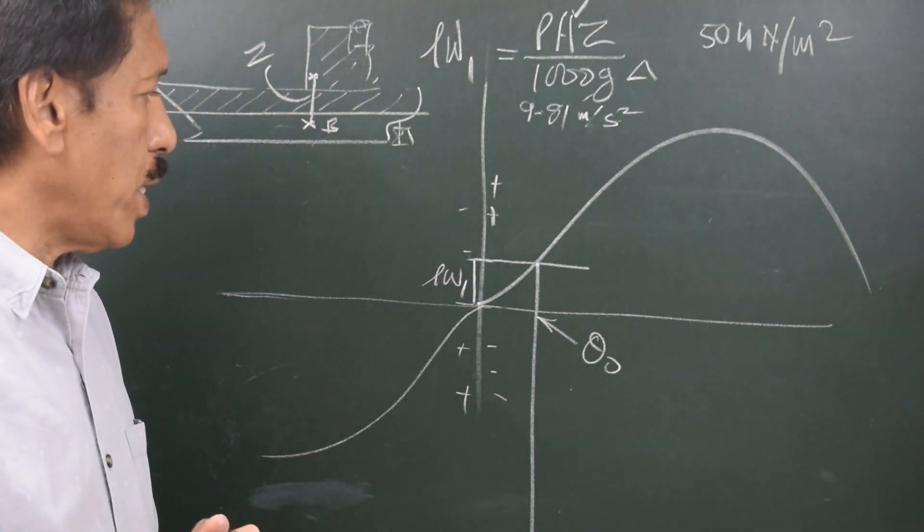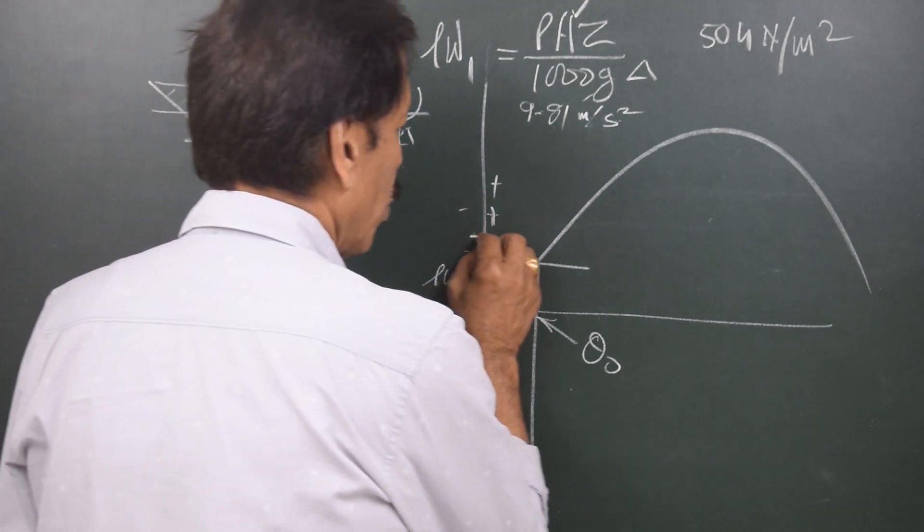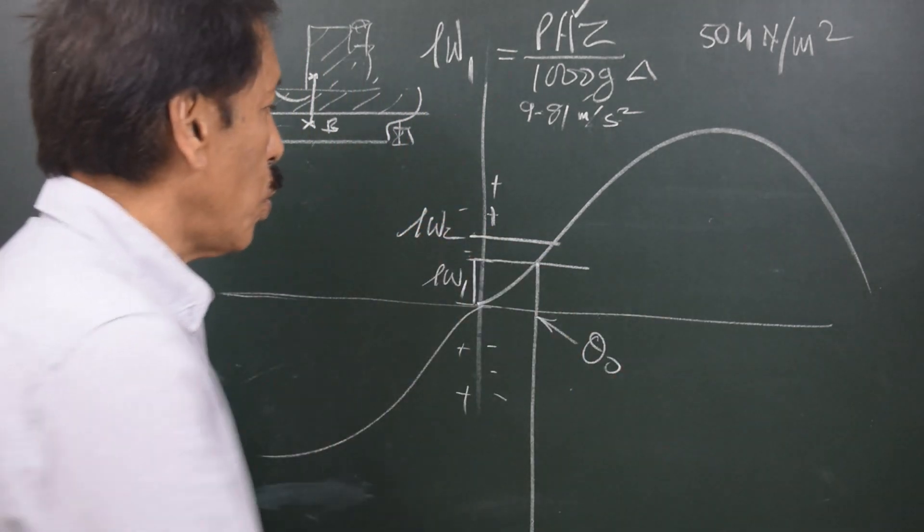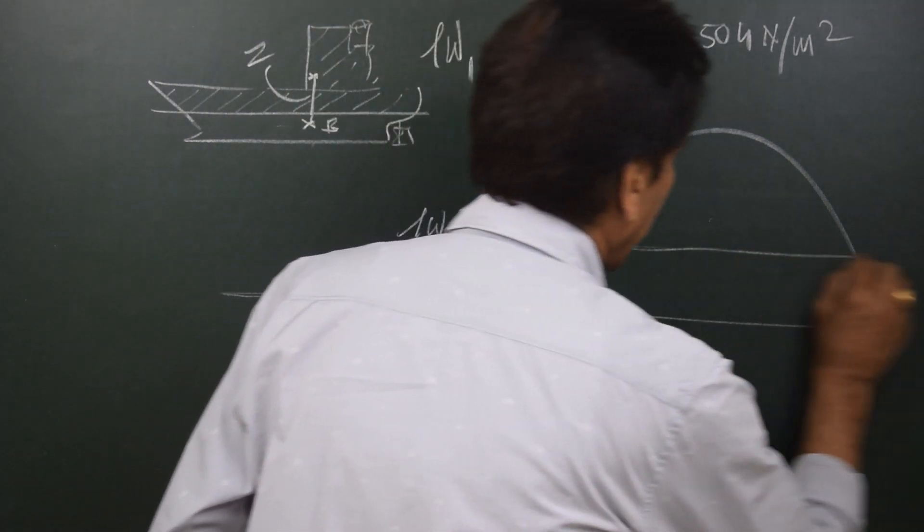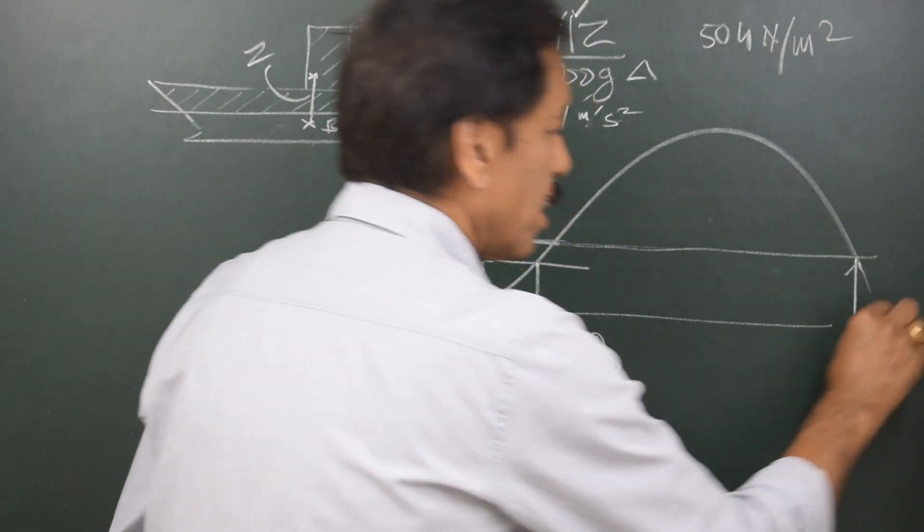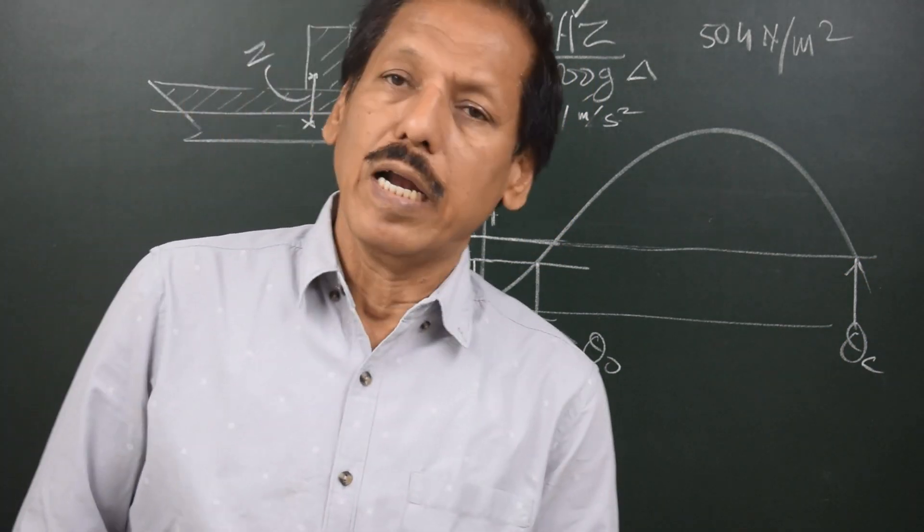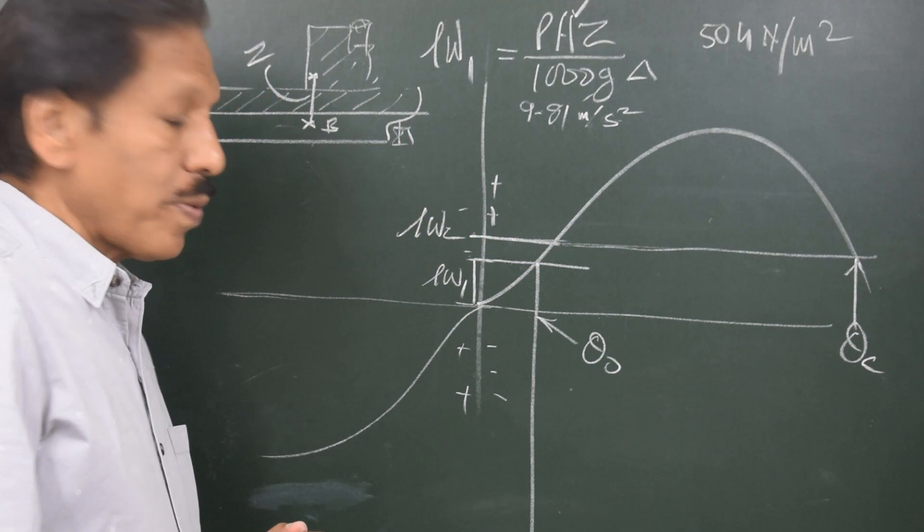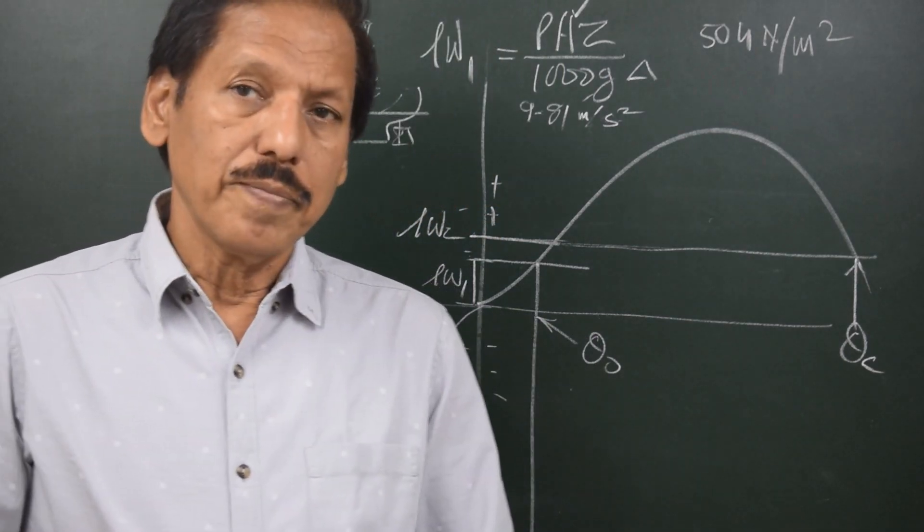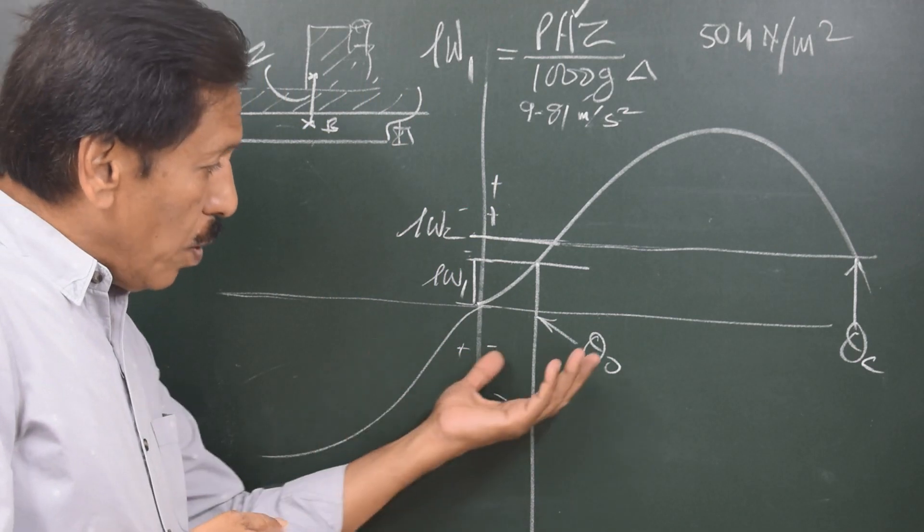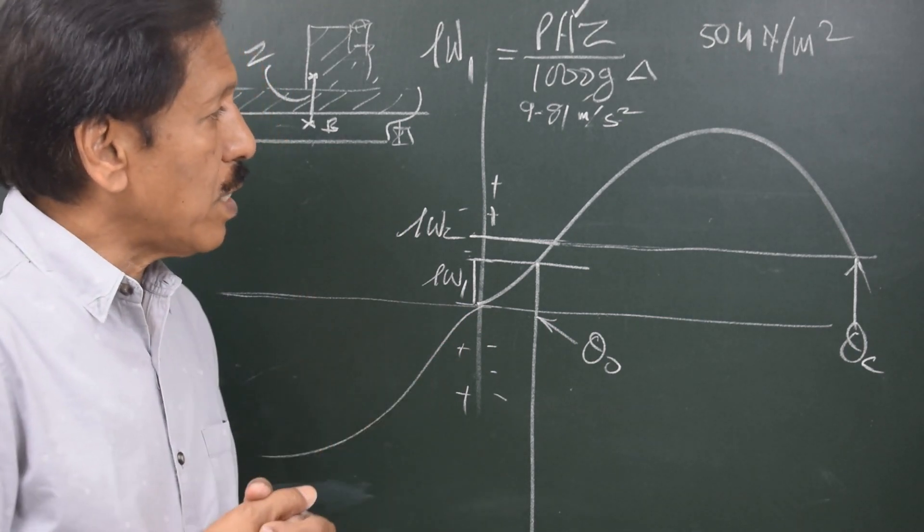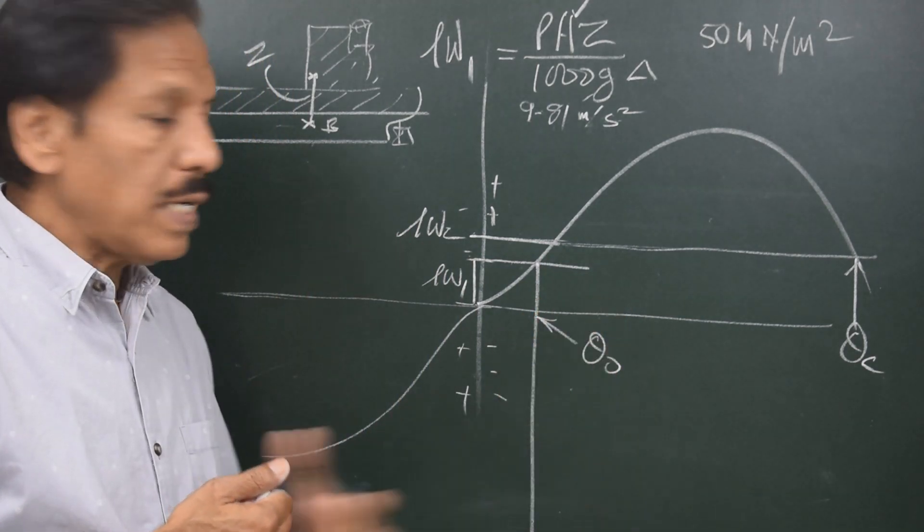So this is how we get LW1. 1.5 times the LW1 is LW2. When we draw the LW2 line, it's a horizontal line parallel to the X axis. Extend it till the end of the GZ curve. So this angle is called theta C. Theta C is the second intercept of LW2. Now what is this LW2? LW2 is a gusty wind lever, and it is 1.5 times LW1.